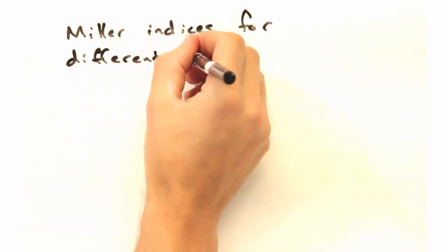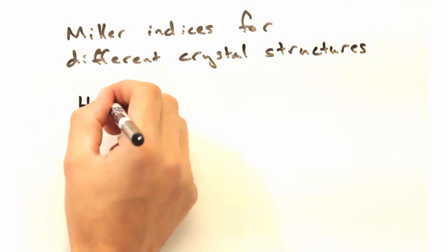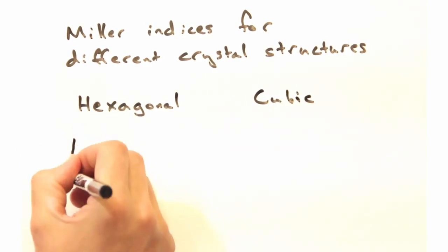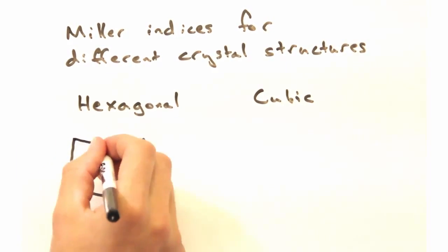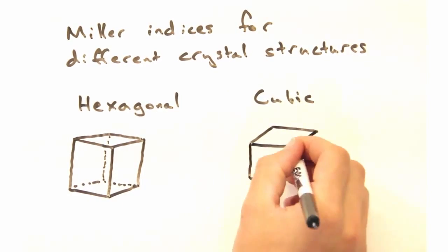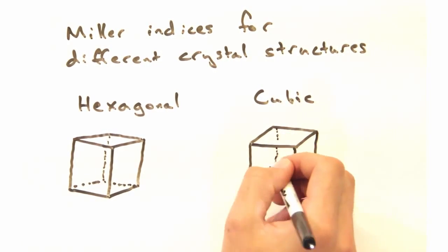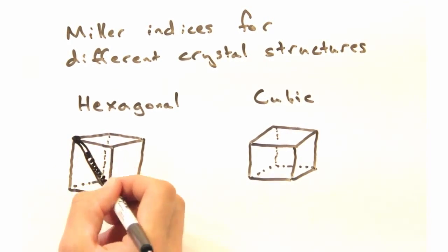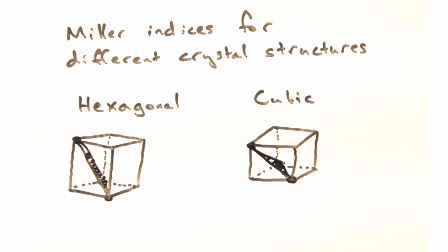We said earlier that planes in different crystal structures would look different. To illustrate this, let's look at a hexagonal lattice with lattice vectors a1, a2, and a3 as so. Using intercepts at 1a1, 1a2, and 1a3, we can reconstruct the 1-1-1 plane, which looks considerably different from the cubic 1-1-1 plane.